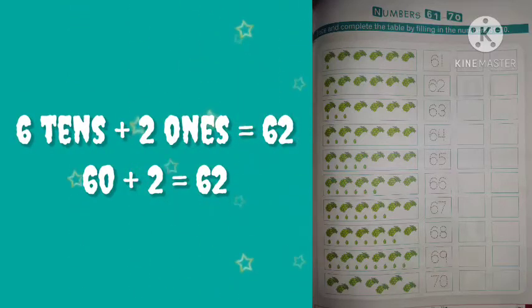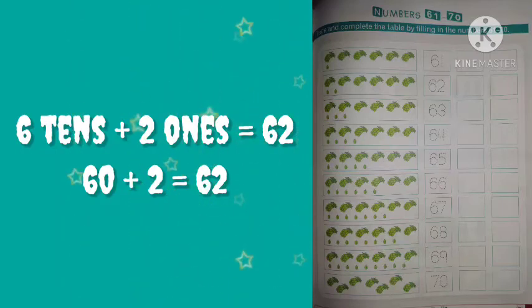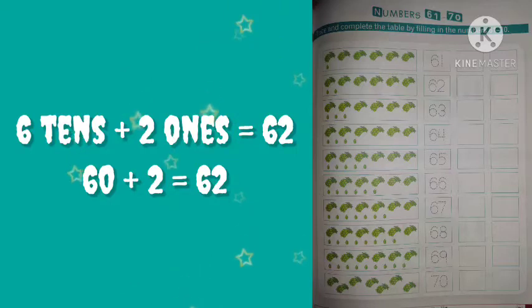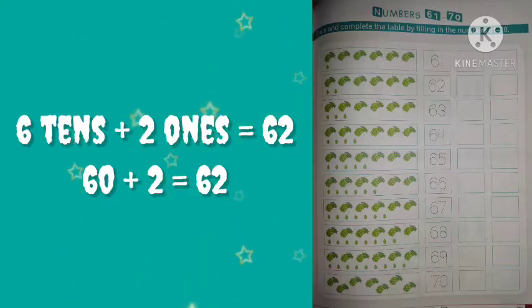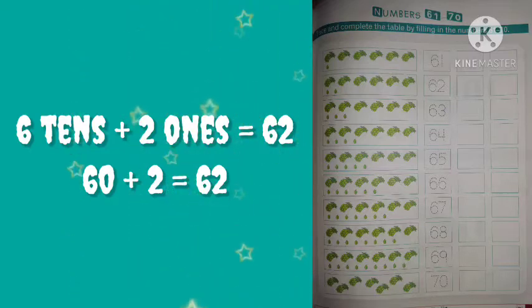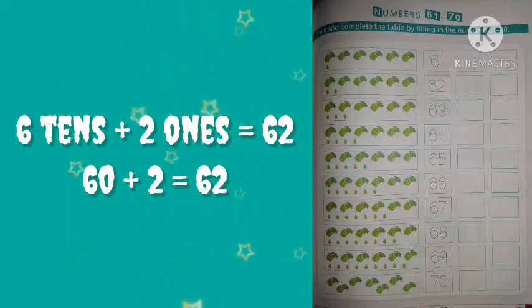In the next box, 6 tens and 2 single graphs means 2 ones. 6 tens and 2 ones is equal to 62. 6 tens means 60 and 2 ones means 2. 60 plus 2 is 62.